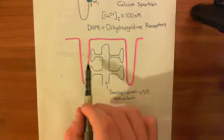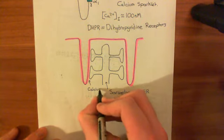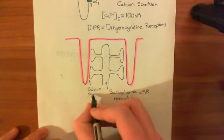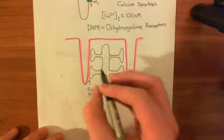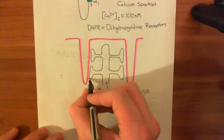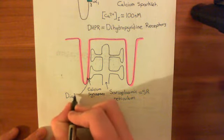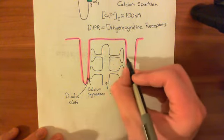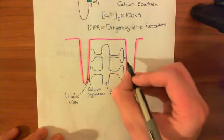The sarcoplasmic reticulum has processes which interact with the membrane, and these are called calcium synapses. Calcium comes in from the extracellular space through the L-type voltage-gated calcium channels and diffuses across the cleft between the plasma membrane and the membrane of the sarcoplasmic reticulum. That gap is known as the dyadic cleft.